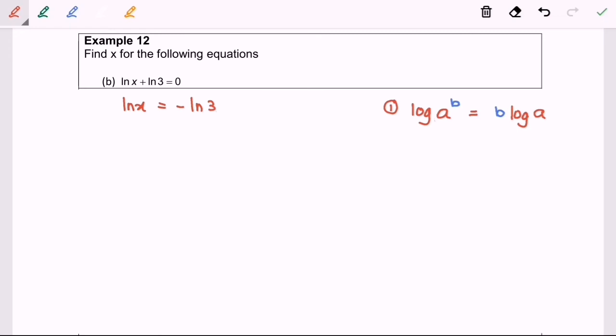Then I'm going to use the properties of log for number 1. ln x is equal to ln 3 to the power of negative 1. So now we have equal base.